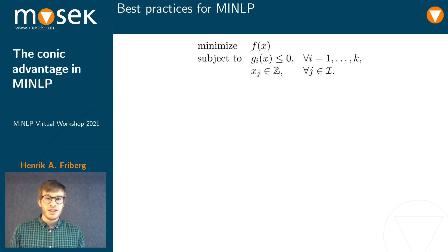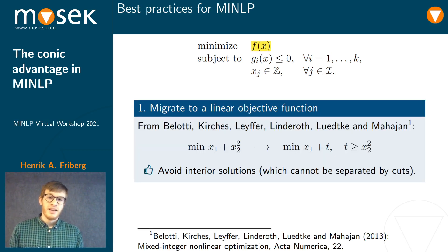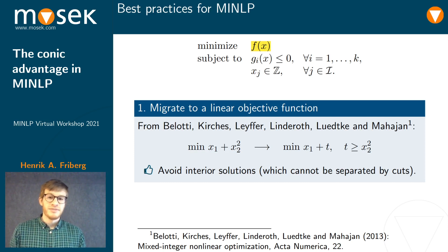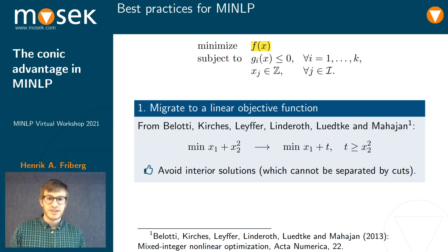To start off, we'll use a standard model where we minimize a nonlinear objective function, subject to a number of nonlinear constraints and integrality on a subset of variables. The first recommendation comes from prominent people in the field: migrate to a linear objective function. In my example, I have x² in the objective, and I can easily move that into the constraint set.